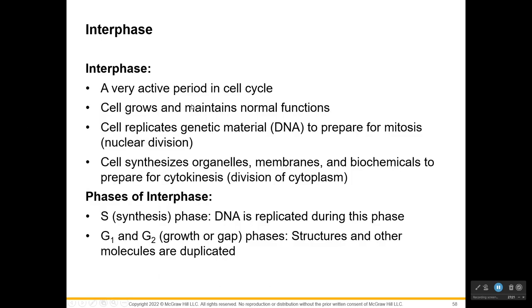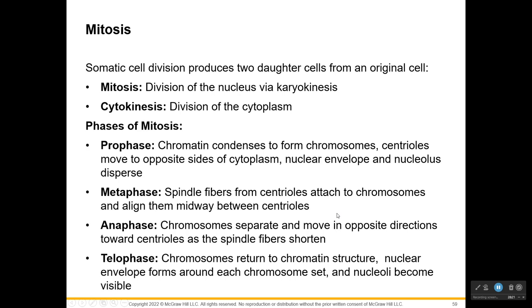Interphase is a very active period in the cell cycle, contrary to what scientists initially believed. It's where the cell grows, and actually in G1, some cells will stay there and maintain their normal function until they need to divide. Then they'll replicate their DNA and prepare for dividing the nucleus and the rest of the cell. In interphase, the cell also makes more of everything else to prepare for division. S phase, which stands for synthesis, is where DNA is replicated. G1 and G2 stand for gap — where the cell grows and prepares to divide.